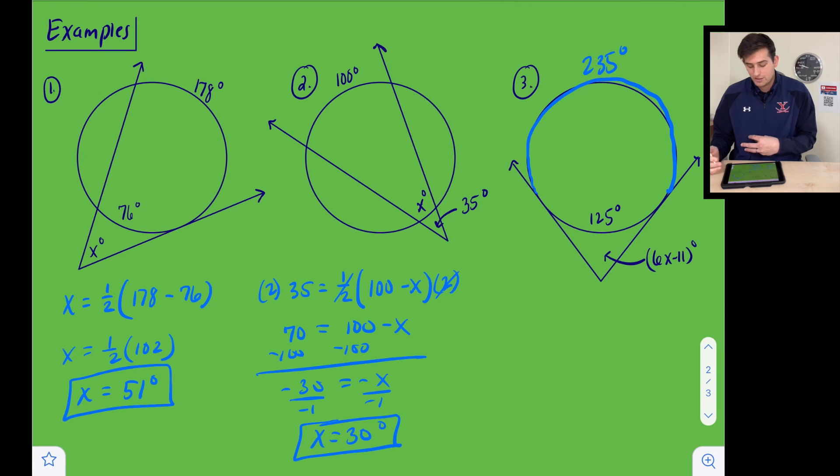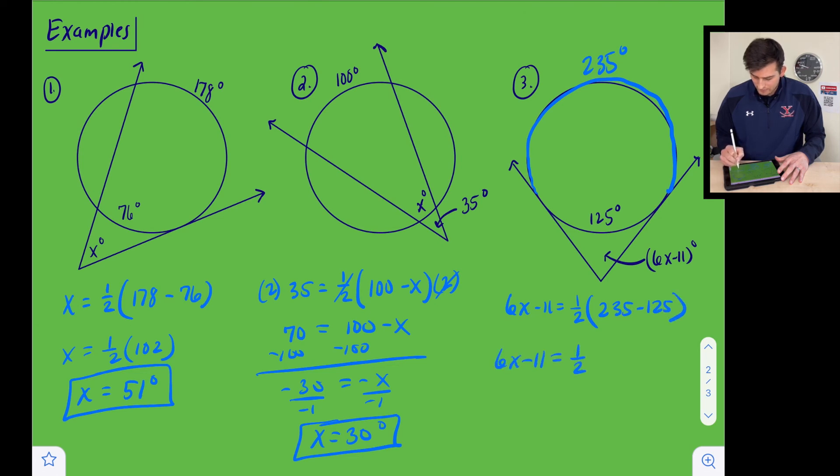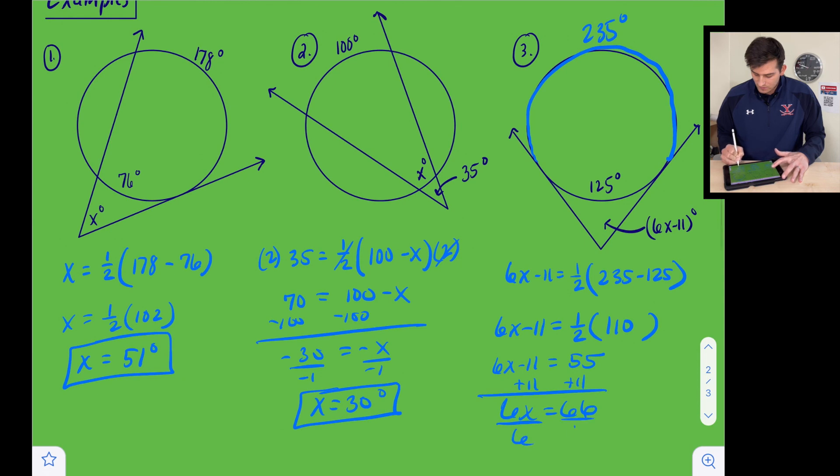And now we have an expression 6X minus 11 that's representing our angle measure. So we can write our equation 6X minus 11 is equal to one half of 235 minus 125. So 6X minus 11 equals one half. And 235 minus 125 would be 110. And now we're going to take half of 110. So 6X minus 11 equals 55. Let's add 11 to both sides. We get 6X equals 66. And now when we divide both sides by 6, we get X is equal to 11.